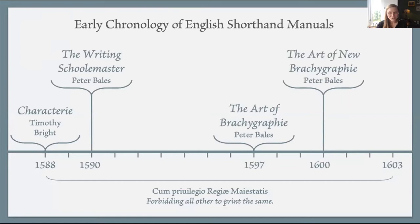The first shorthand manual, called Charactery, was published in 1588 by a doctor named Timothy Bright, and was granted a 15-year copyright from Elizabeth the First. Two years later a writing master named Peter Bales published a derivative system. So 12 years into the 15-year patent, there were already three more books in violation of that patent. This is an important lesson in the history of shorthand: as soon as a system is out there, it's as good as in the public domain.